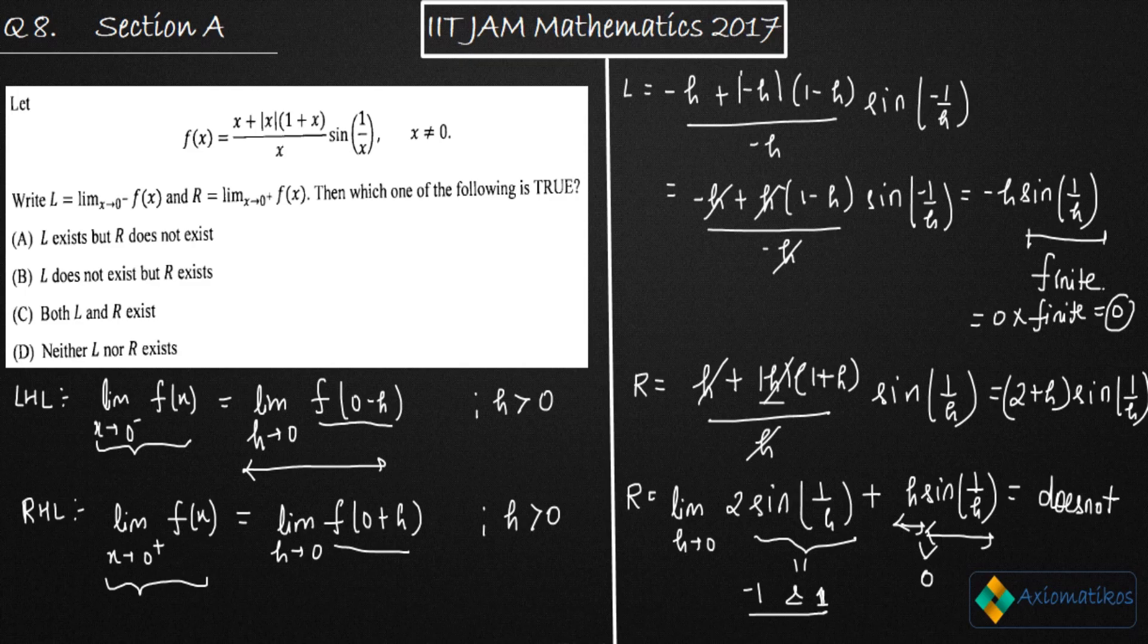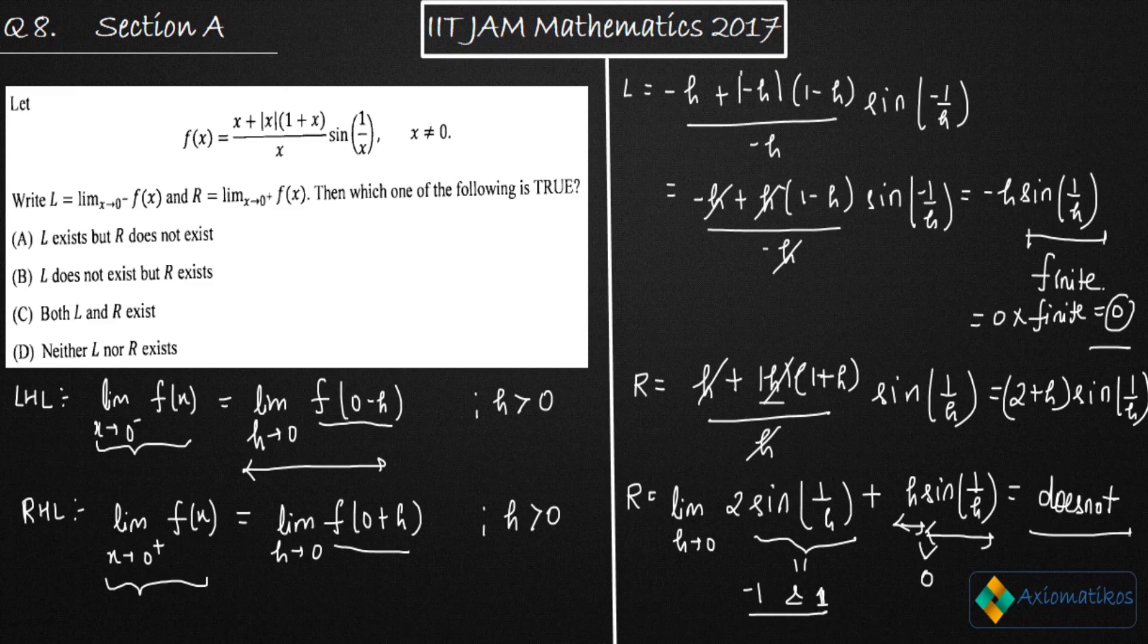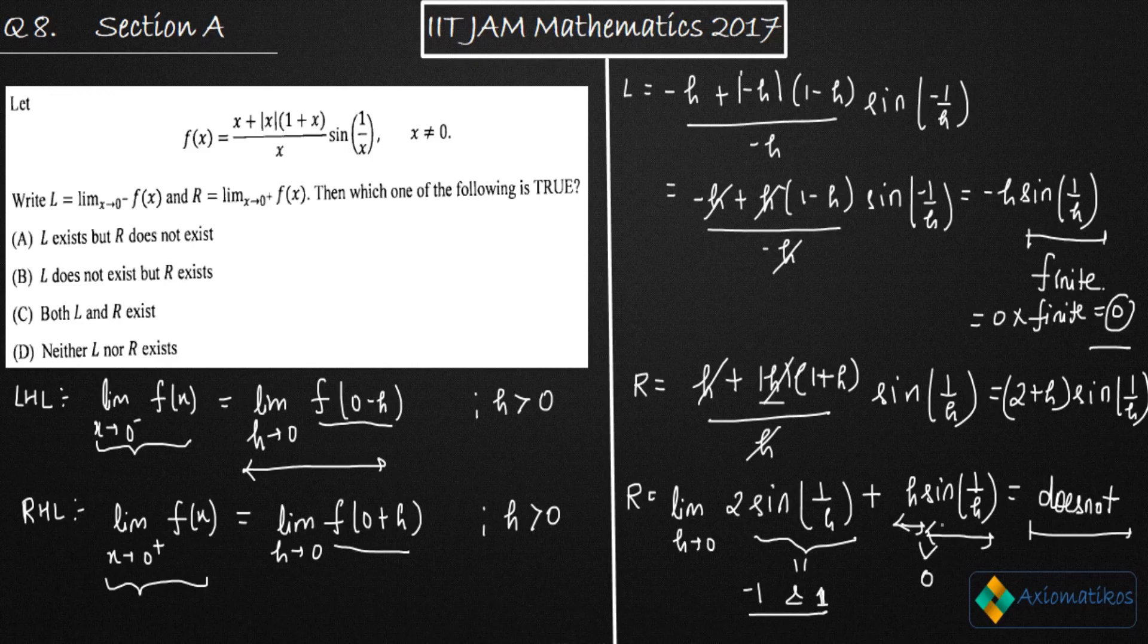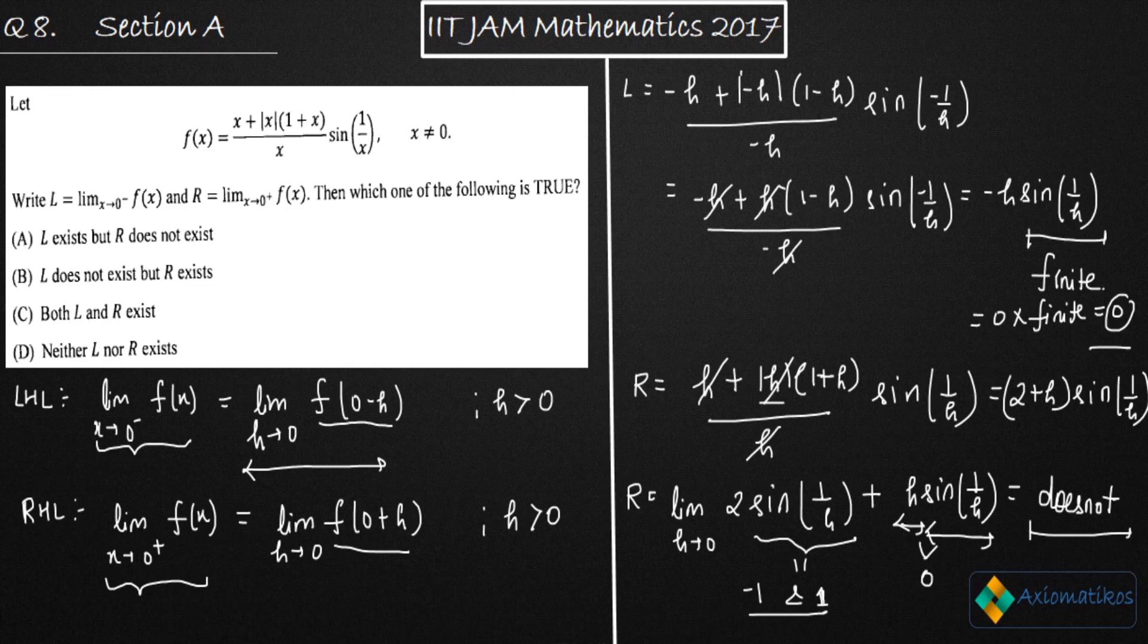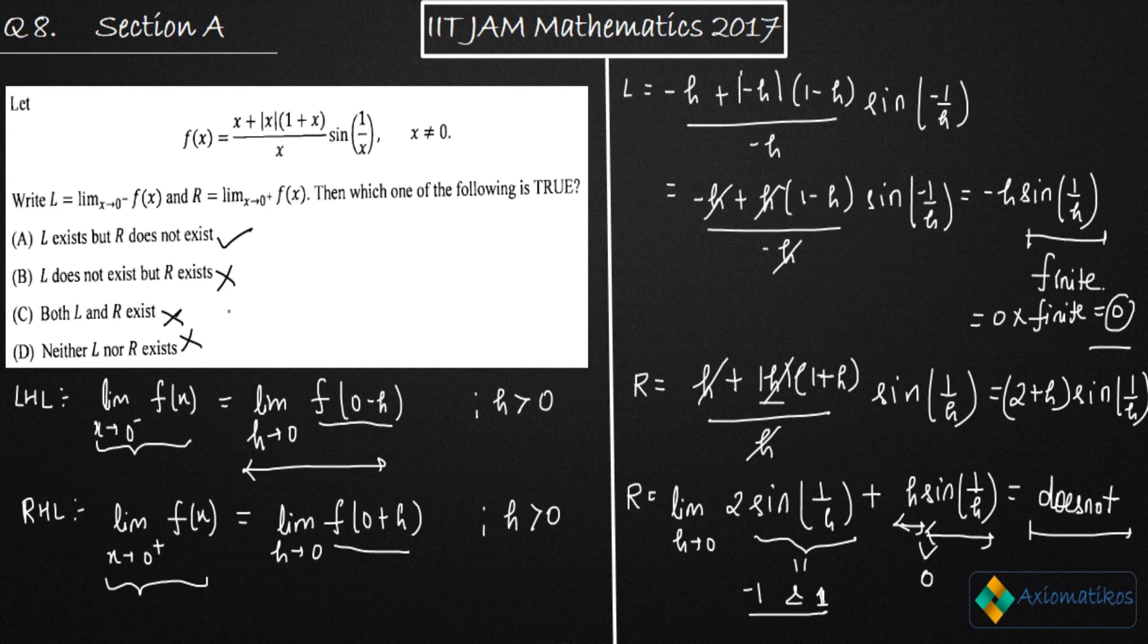So finally, what we have proved is that your A answer is correct and all other remaining answers are false because we are getting a finite number for L. Therefore we can say that L exists, whereas we can say that R does not exist. So A is your correct answer. Your option A is the correct option, B is incorrect, C and D all are incorrect. Thank you.